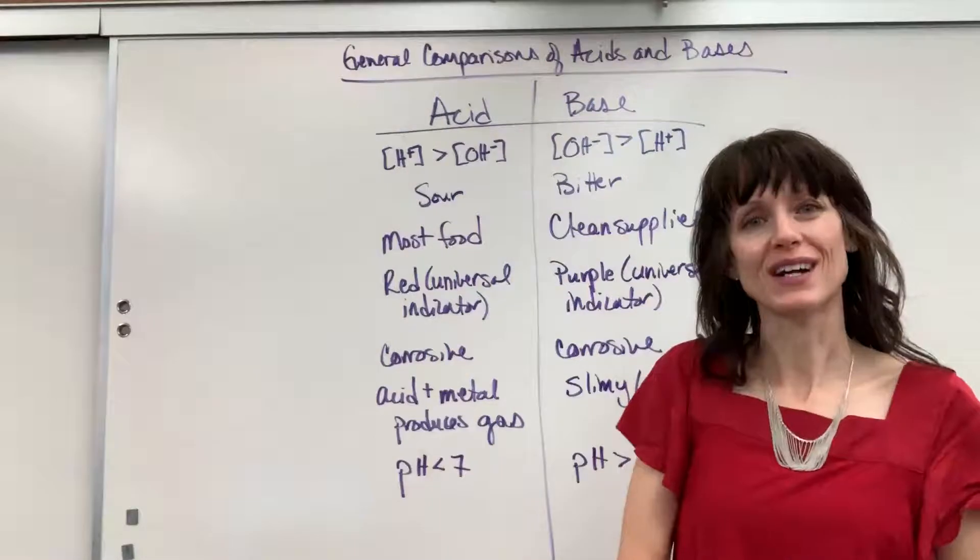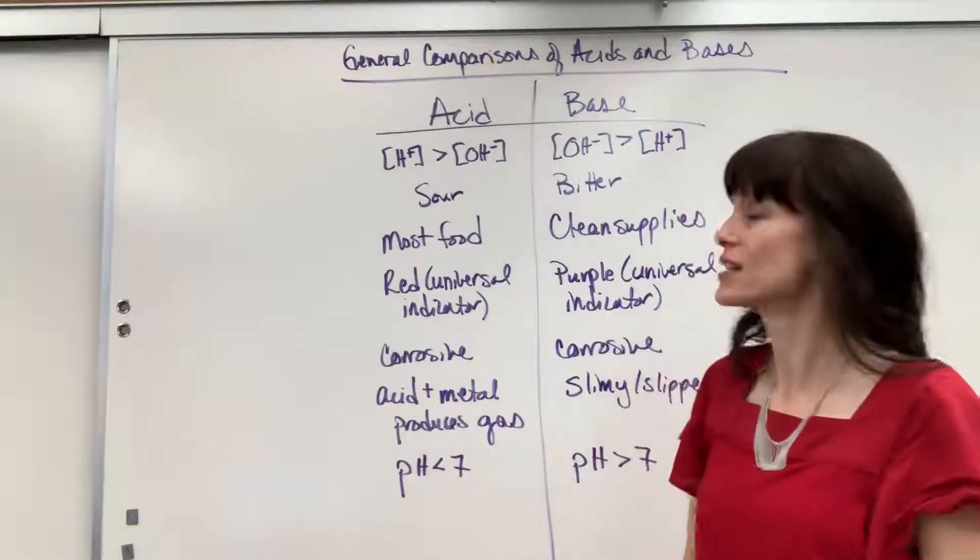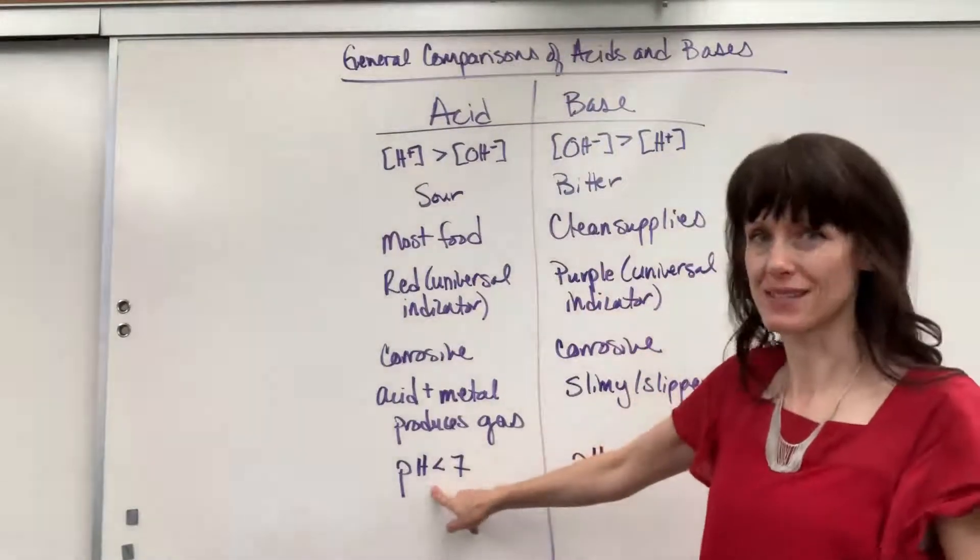So an acid, the hydrogen concentration is greater than the hydroxide concentration. That is what makes the pH less than seven.